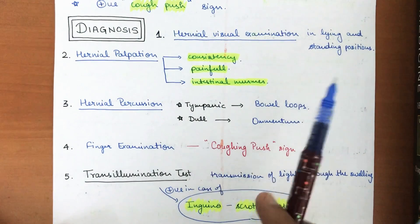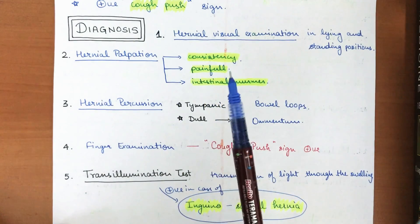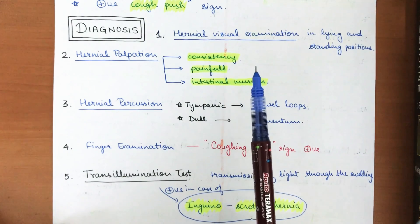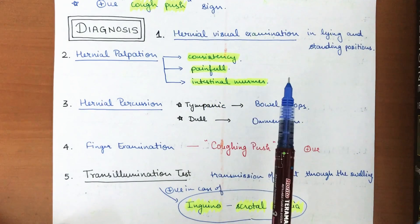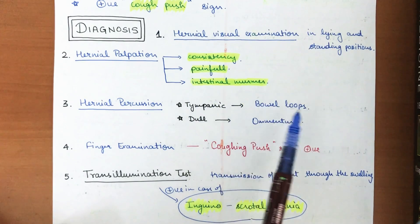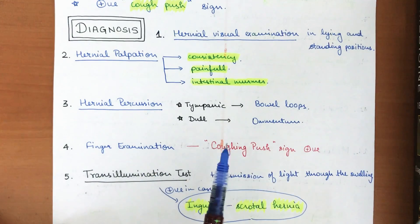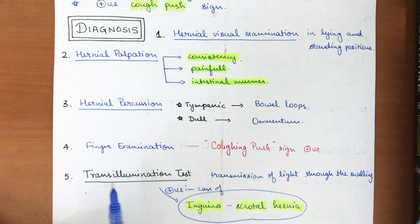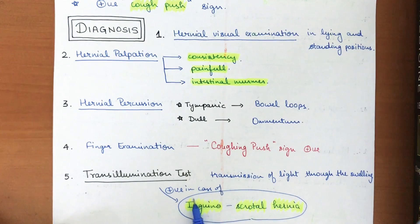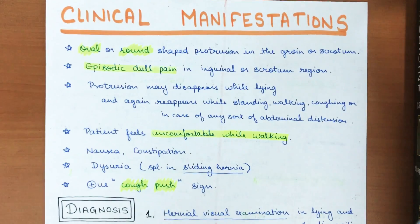For diagnosis, visual examination is done in both lying and standing positions. On palpation, the cough push sign and consistency of the hernial sac are assessed, noting if it is painful. On percussion, a tympanic sound suggests bowel loops in the sac, while a dull sound suggests omentum. Trans-illumination test is positive in inguino-scrotal hernia due to the thinned-out skin, as light is transmitted through the swelling.